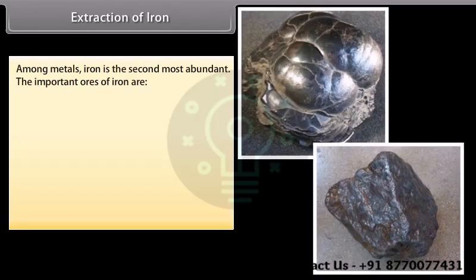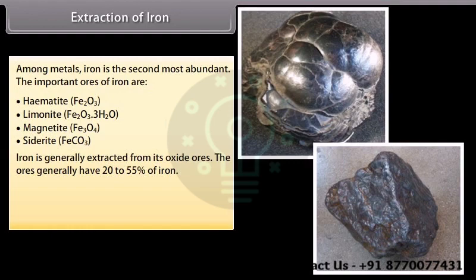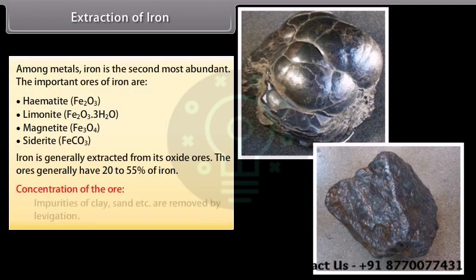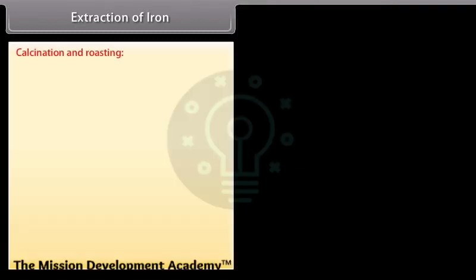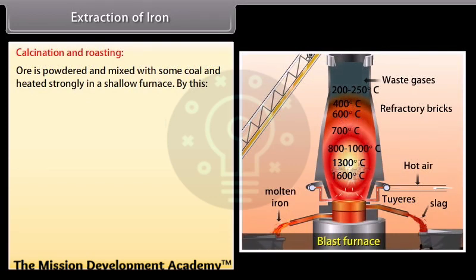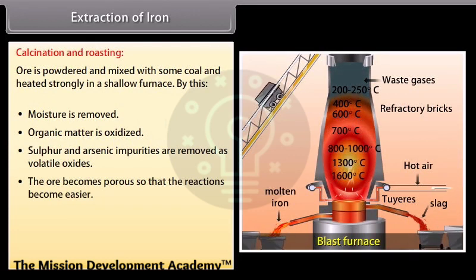Extraction of iron. Among metals, iron is the second most abundant. The important ores of iron are hematite or red iron ore, lemonite or brown ore of iron, magnetite and sidrite. Iron is generally extracted from its oxide ores. The ores generally have 20 to 55 percent of iron. Concentration of the ore: Impurities of clay, sand, etc. are removed by lavigation. Calcination and roasting: Ore is powdered and mixed with some coal and heated strongly in a shallow furnace. By this, moisture is removed, organic matter is oxidized, sulfur and arsenic impurities are removed as volatile oxides, and the ore becomes porous so that the reactions become easier.